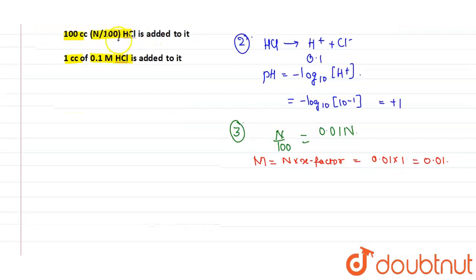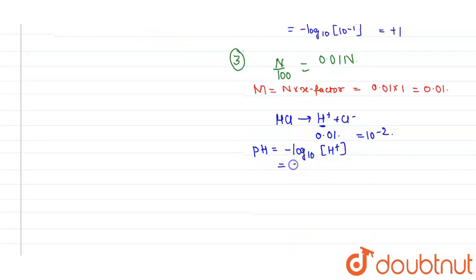Now HCl is added here, so HCl will break into H positive and Cl minus. The concentration of H positive will be 0.01. If we calculate the pH, it will be minus log 10 H positive, which is minus log 10 of 10 to the power minus 2. This value comes to be 2, so the pH has remained the same. This is our answer.